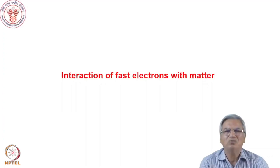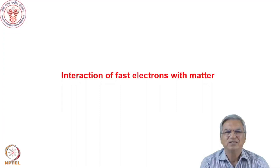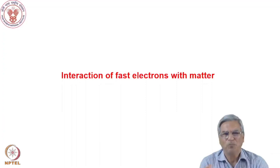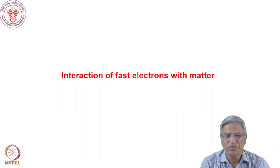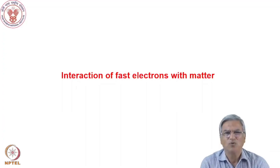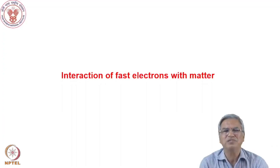We saw how stopping power is related to the energy and charge of the ion. There is a term depending on the property of the ion, and another term depending on the property of the absorber medium — that is nz, the electron density, the number of atoms per cc times the atomic number of the material, essentially the electrons per cc.